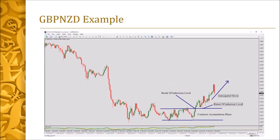On Pound against New Zealand Dollar, we had a beautiful contract accumulation phase. After that phase, we had a break of the indecision level and a retest of the indecision level — then this was the anticipated move.